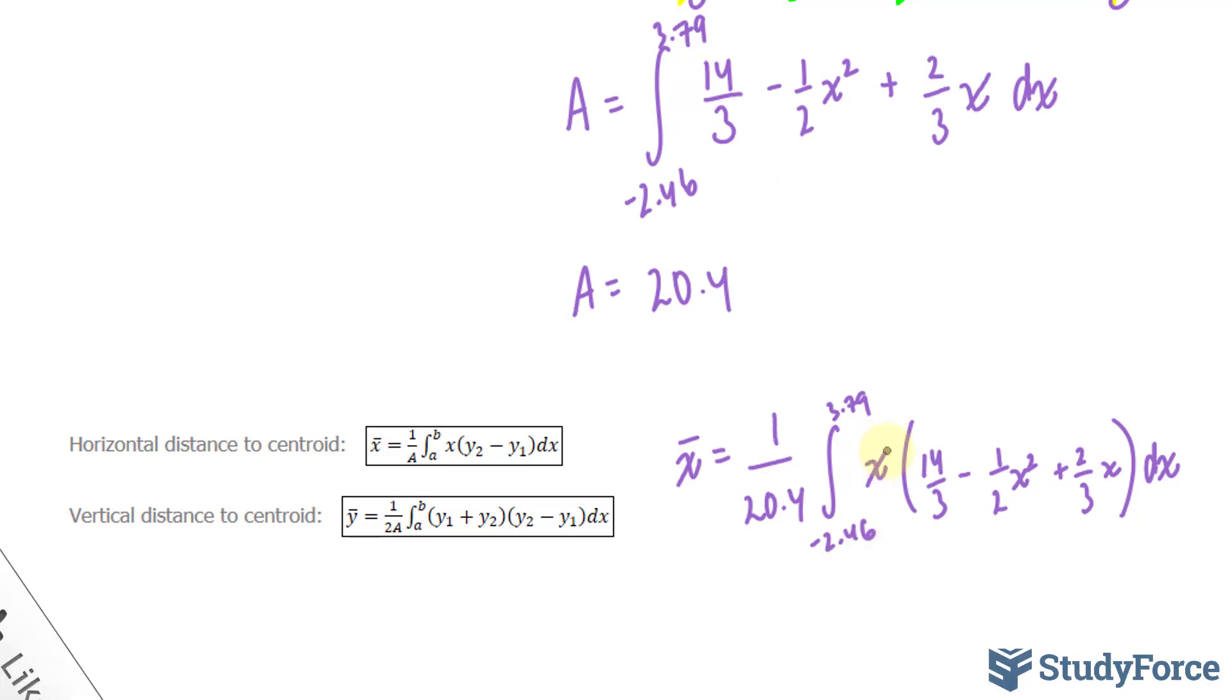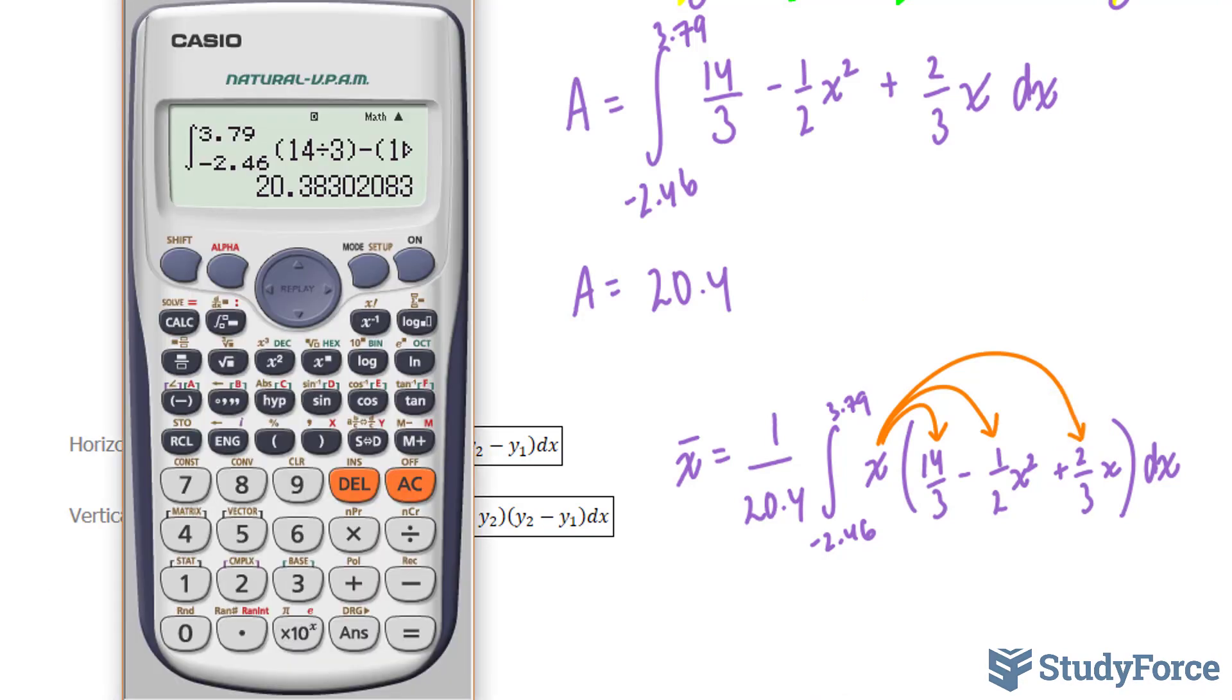Next, what I have to do is multiply this x into each of these terms. And instead of doing this manually, which is going to take a really long time, what I will do is input this in my calculator. And it's not much different than what I was working on earlier. I'll put a bracket at the front and I'll multiply the whole function by x. Times x. That gives me 13.58. That's just this part. Divided by 20.4, gives us 0.66.